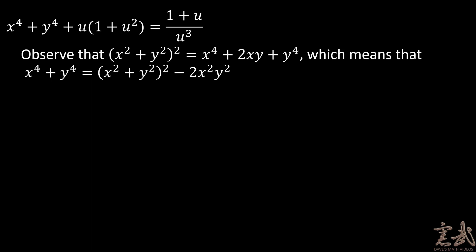Well, we can observe that the quantity x squared plus y squared squared is equal to x to the fourth plus 2xy plus y to the fourth. Which means that x to the fourth plus y to the fourth is nothing more than the quantity x squared plus y squared squared minus 2x squared y squared. Again, x squared plus y squared is simply going to be 1 and x squared y squared is equal to u squared.